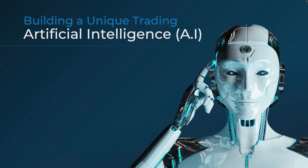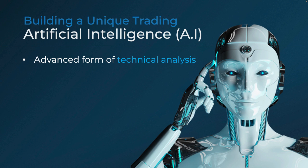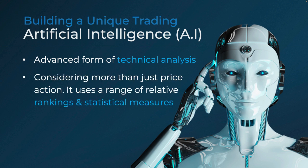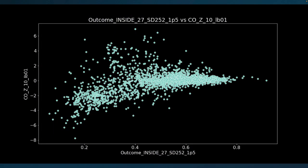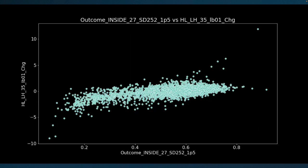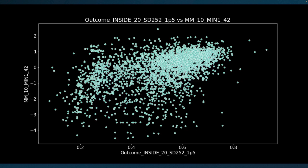I don't profess to be an expert in AI, so I'll give you my layman's explanation of what the algorithm is doing. The AI algorithm is a form of technical analysis but way more complex and sophisticated than any human could manage. Instead of looking at a few trend lines and indicators on a chart, the AI is considering more than 300 different points of data for each trade candidate — many of these are rankings of stocks across thousands of others in the market. Essentially the AI is looking at all the relationships and correlations between these data points to forecast a higher probability that the stock will continue to trade sideways. These are some of the actual data correlations displayed on scatterplots that you can see on the screen.